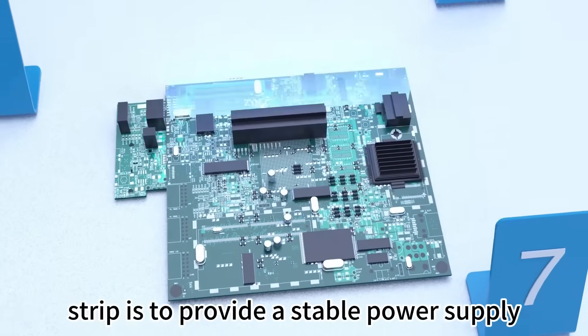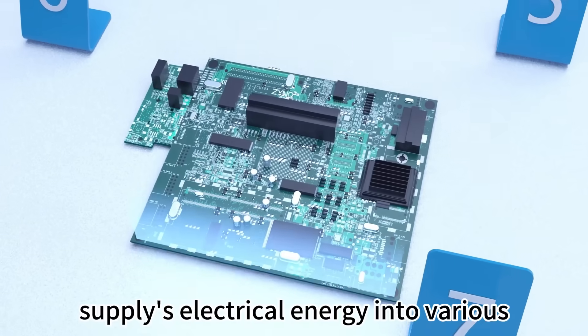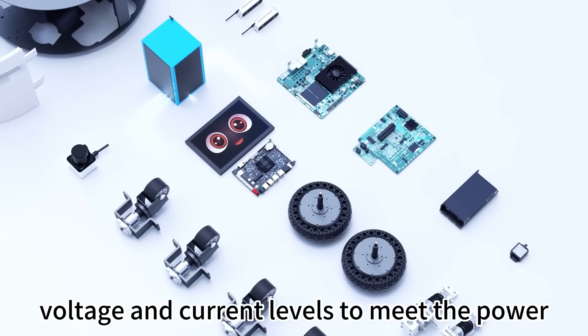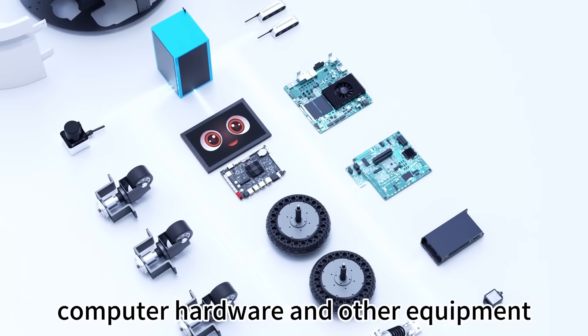The power strip provides a stable power supply and converts the electrical energy into various voltage and current levels to meet the power needs of the robot's computer hardware and other equipment.